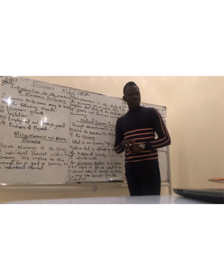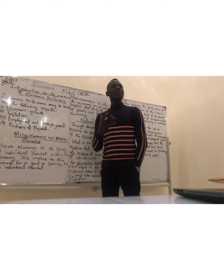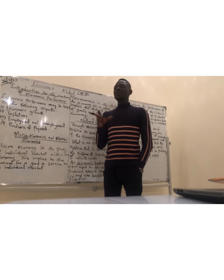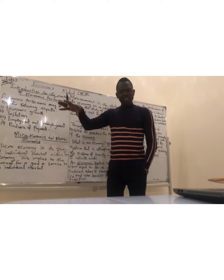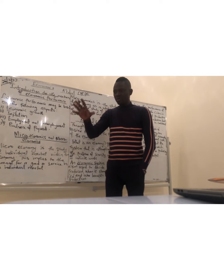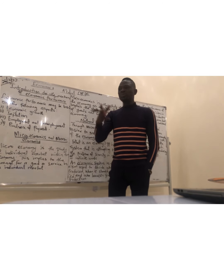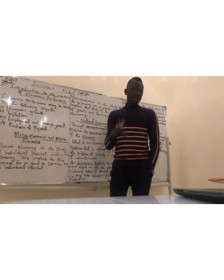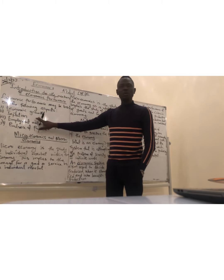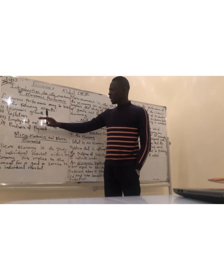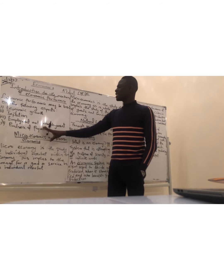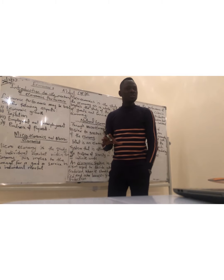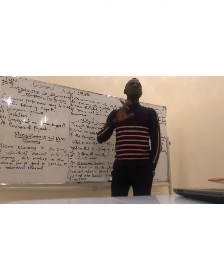The measurement of economic performance — when you talk about measuring economic performance, it cuts across how the economy is performing. So how can you judge an economy? What are the criteria used in judging an economy? You can use economic goods, inflation, employment and non-employment, and the balance of payments. These four criteria are used to judge the performance of an economy.